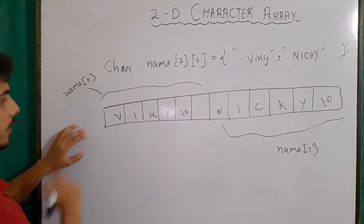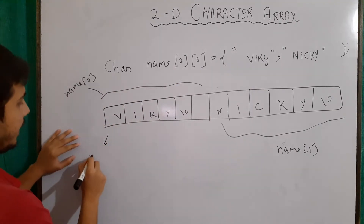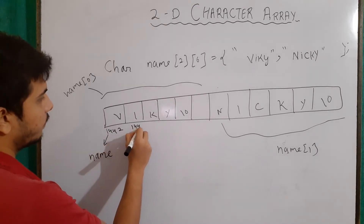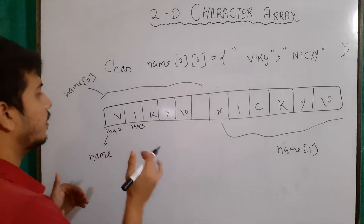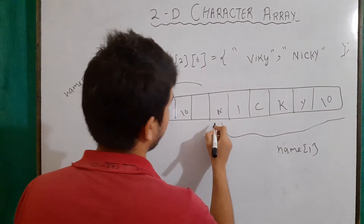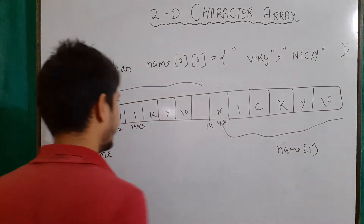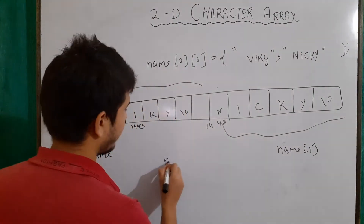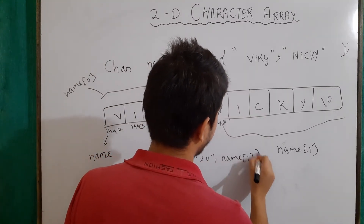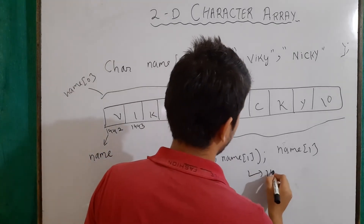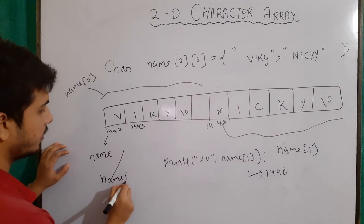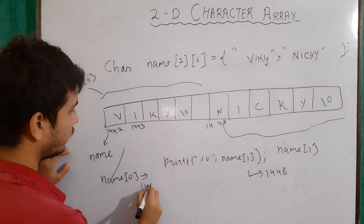This array has a base address. Let the base address be 1442. The next address will be 1443, because it is a character type and character is 1 byte, so it increments by 1. So addresses go 1442, 1443, 1444, 1445, 1446, 1447, and then 1448 onwards. If I write printf("%u", name[1]), it will give me address 1448. And printf("%u", name[0]) will give me address 1442.